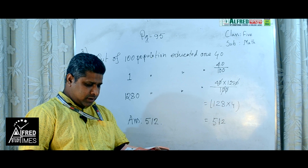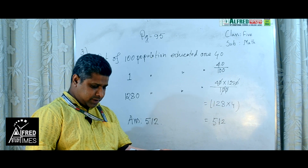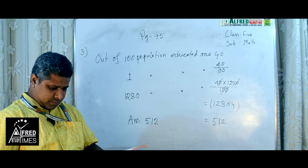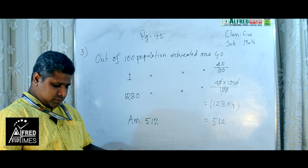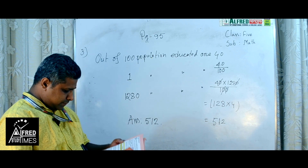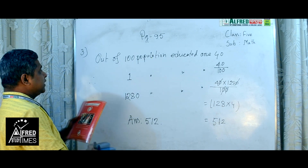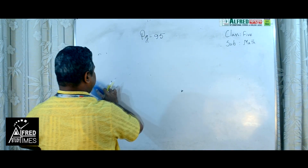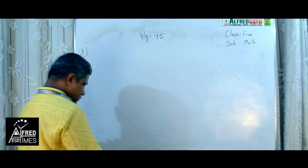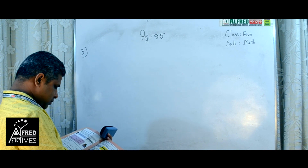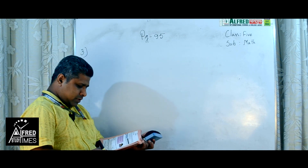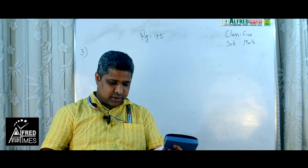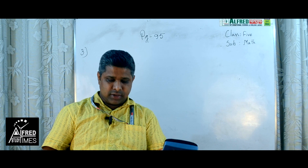Another one — question number 4, page 95. There are 50 students in grade 5 and 42% of the students are girls. How many girl students were in the class?